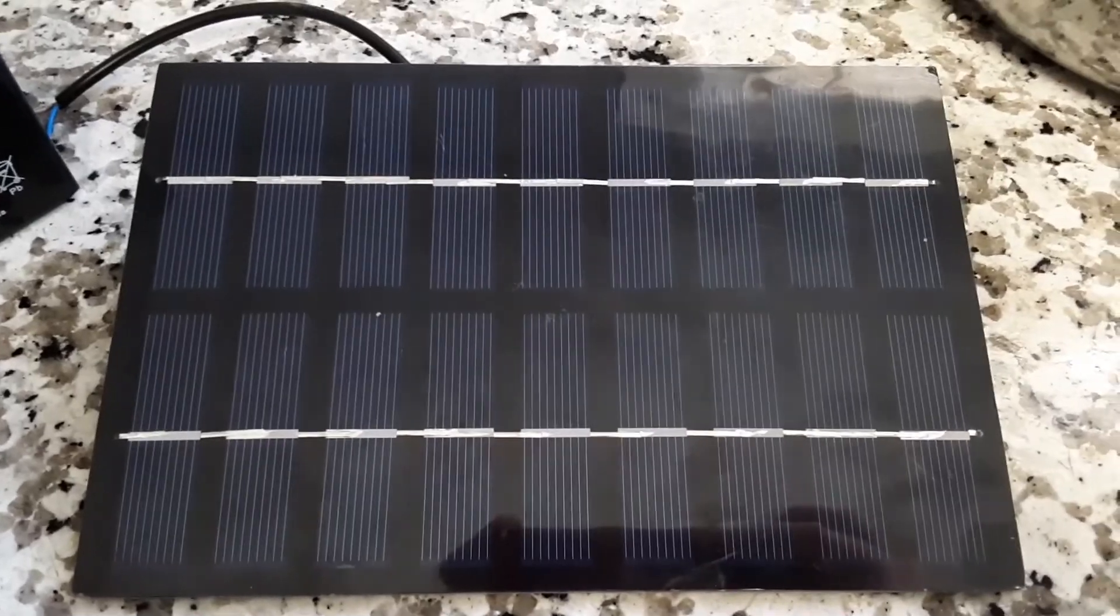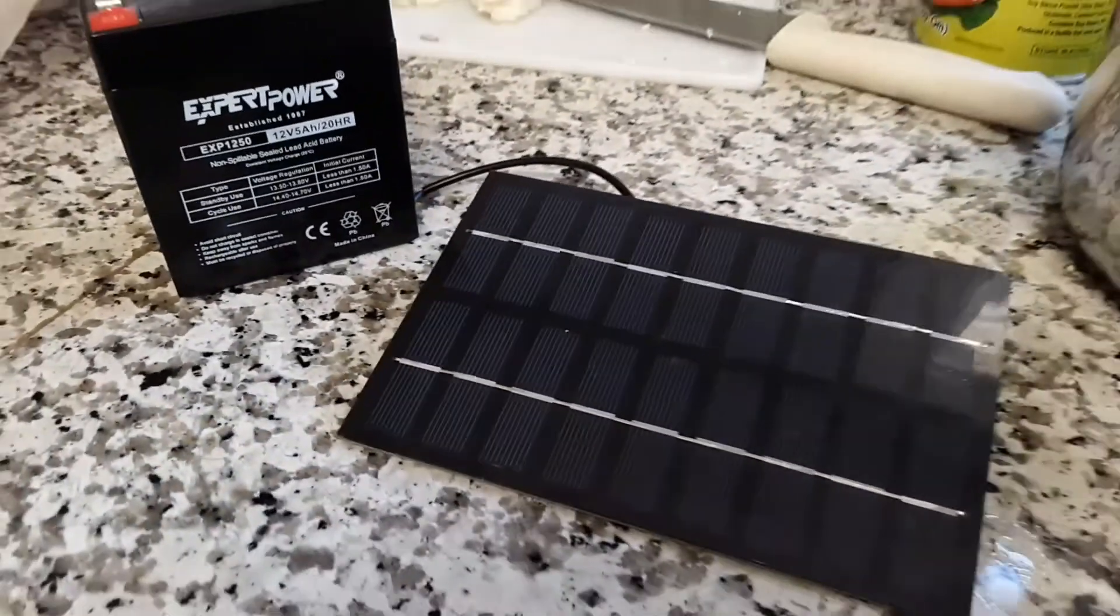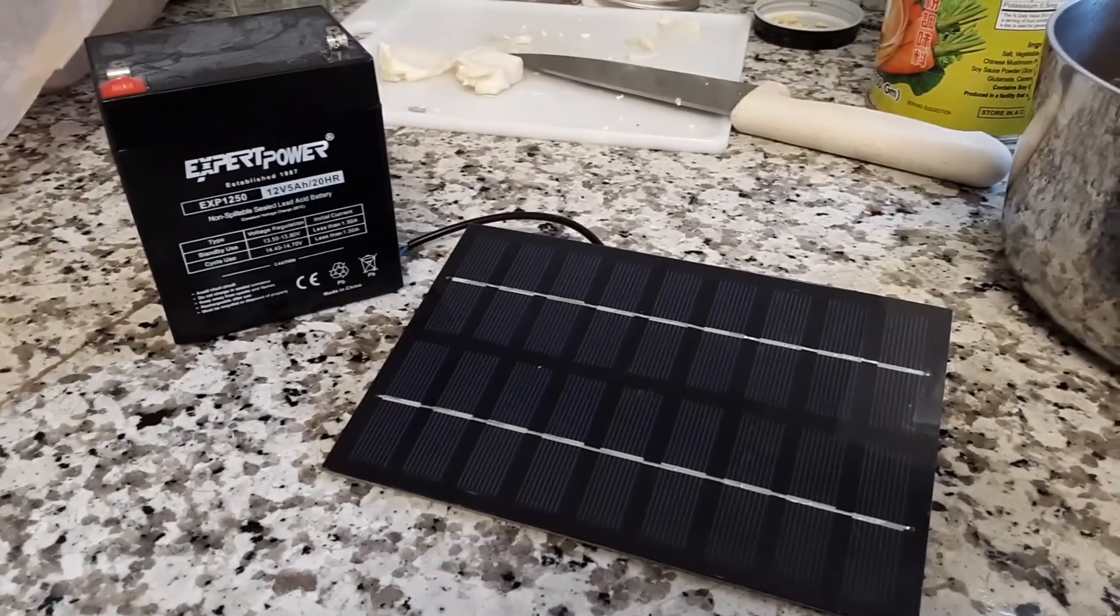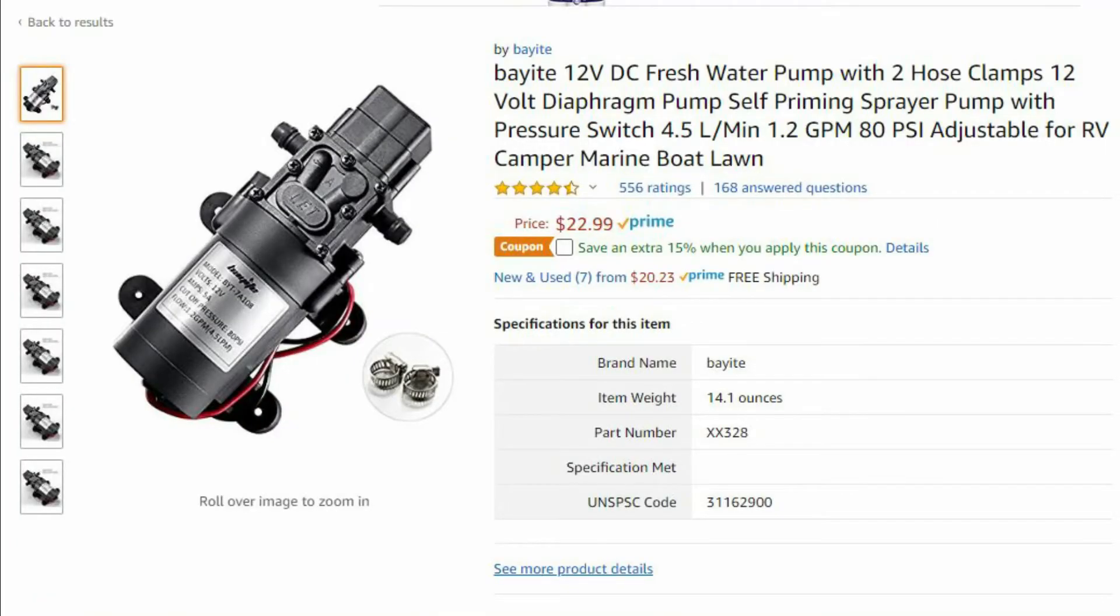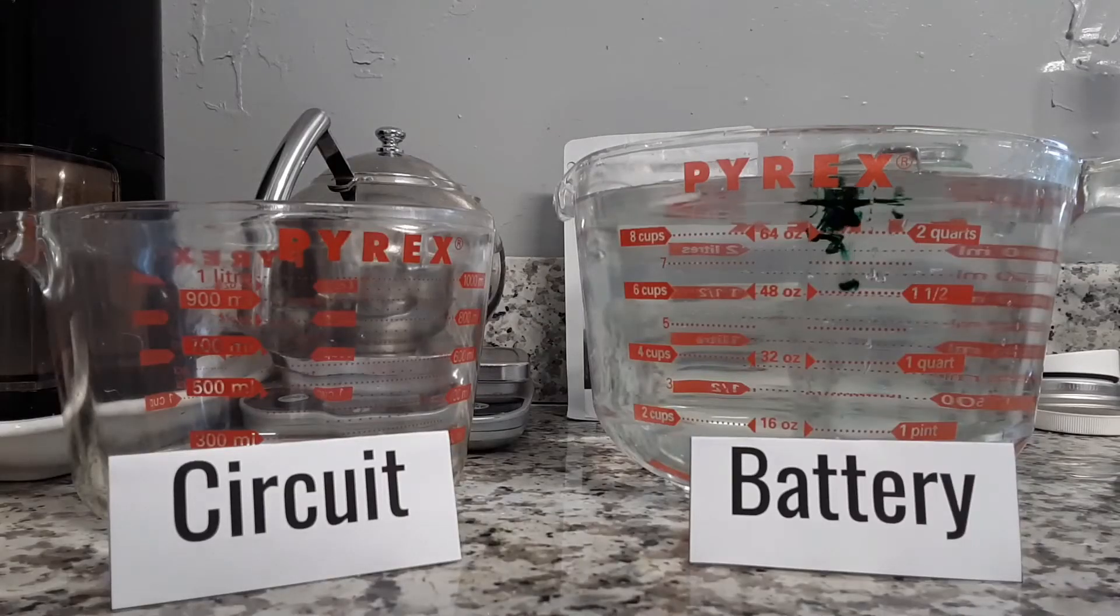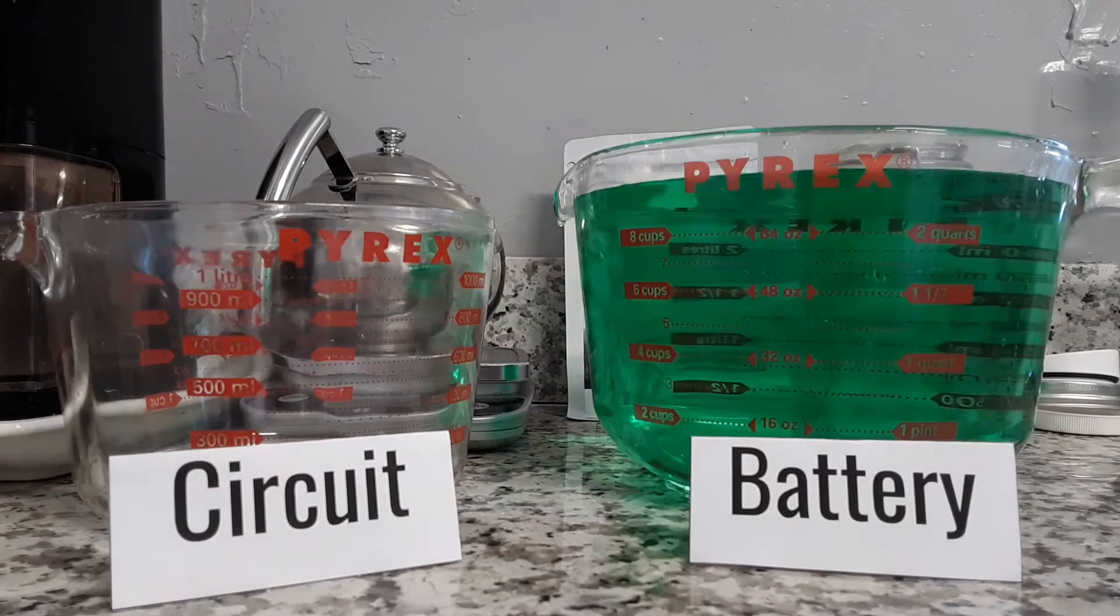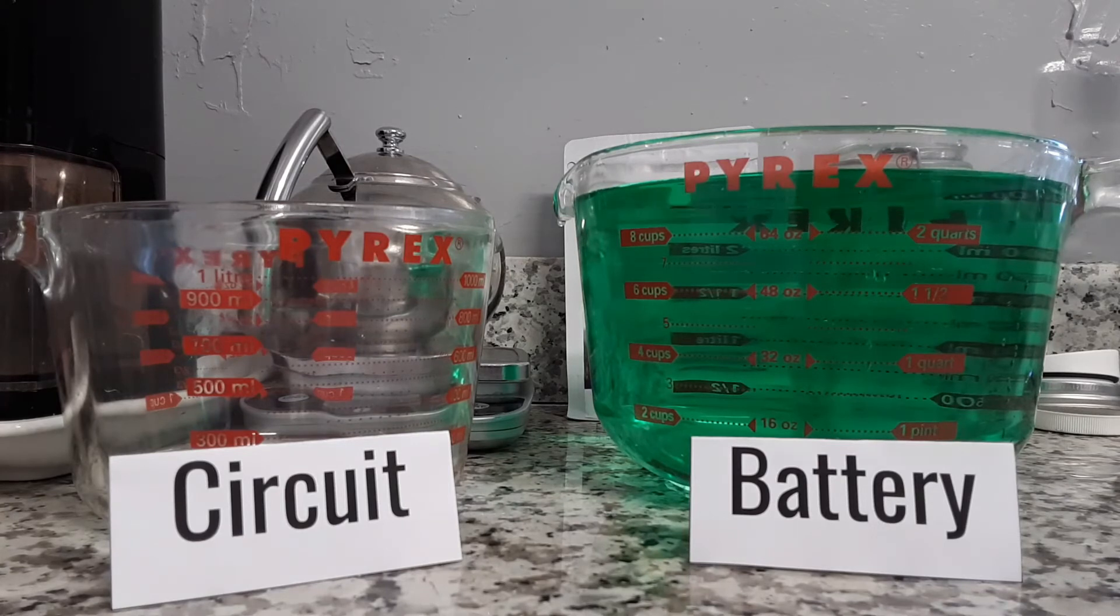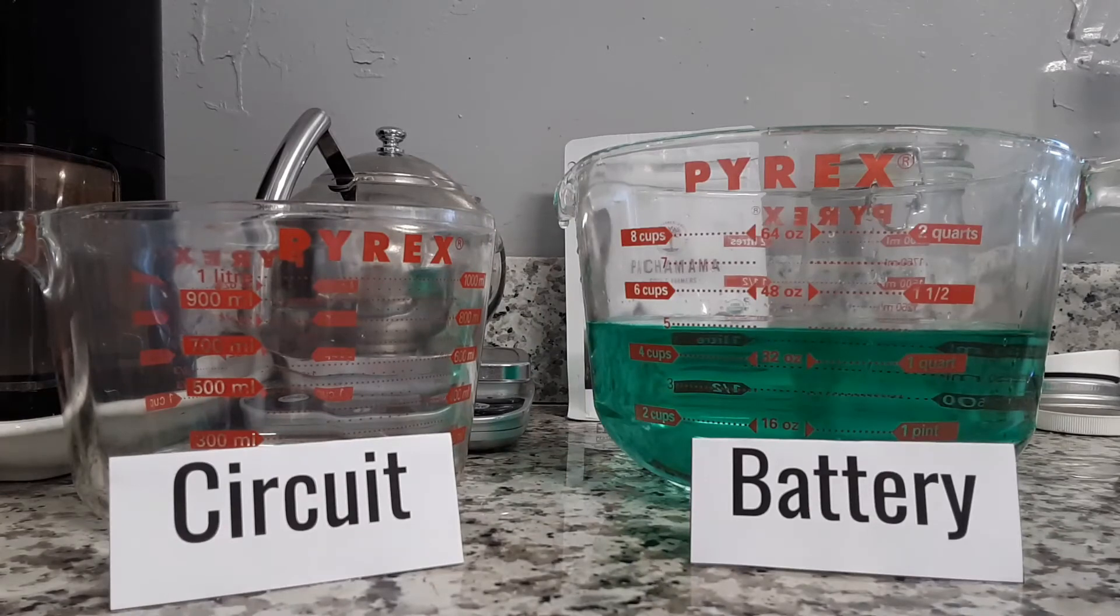Now, a small solar panel can easily keep up with the draw, but keep in mind, this does not include the draw of a small water pump. To help visualize how much power the circuit really draws, this pitcher of water represents a full 10 amp hour battery. Since this is a lead acid battery, it's a good idea to only drain the battery to around 50%, which means the battery is pretty much a 5 amp hour battery.